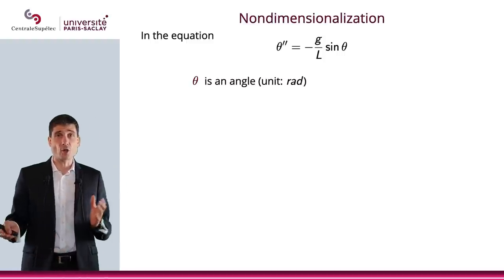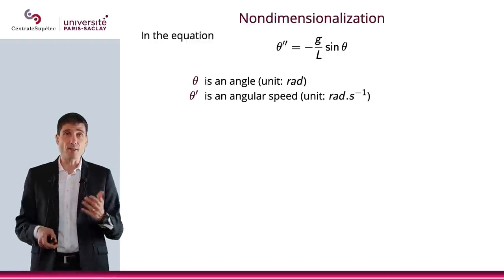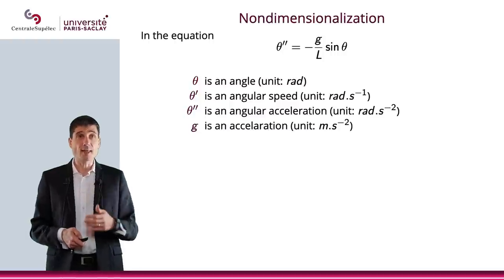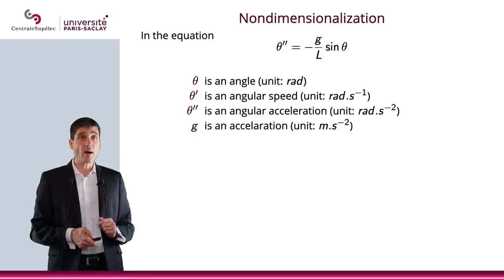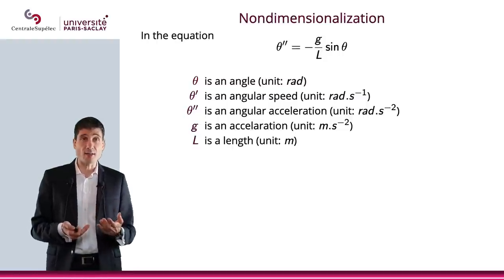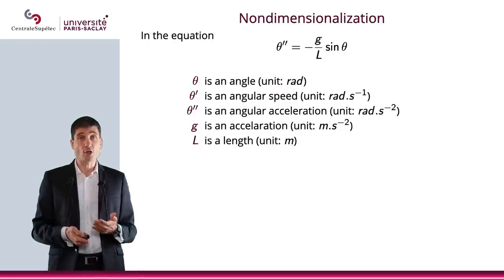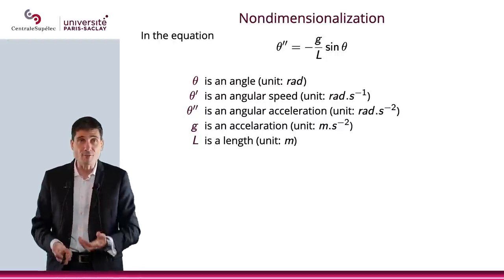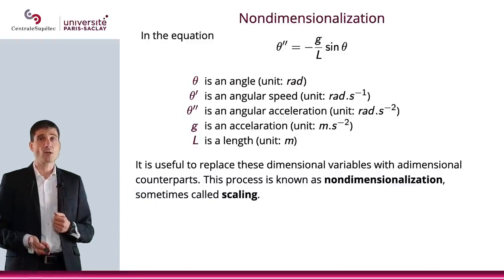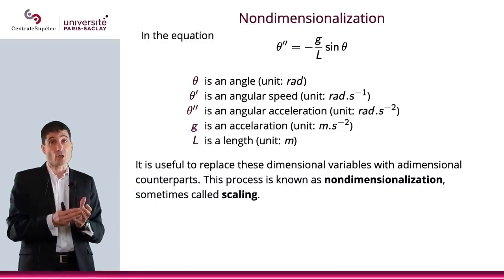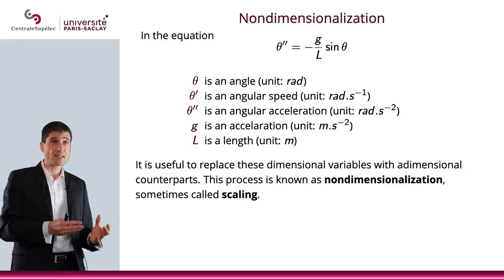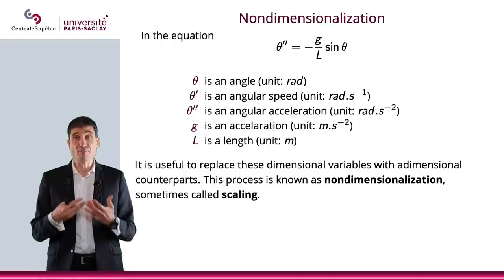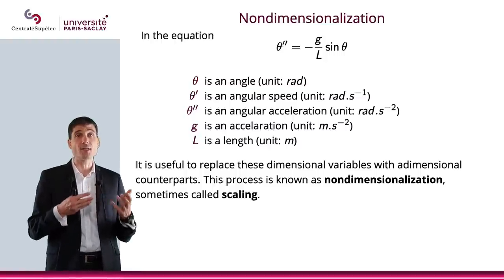Now, in the equation, what are the units that are coming into play? The angle, the unit is radian. The angular speed, that will be radian per second. The angular acceleration, that will be radian per second squared. Obviously, g, which is an acceleration, that's a meter per second squared, and the length, the unit is a meter. We could change the units. We could have other units, but we'll still have a unit of length, a unit of acceleration, and so on, so forth. Now, what we need to do from a mathematical point of view is to replace these dimensional variables with nondimensional variables. And this process is called scaling or it's called nondimensionalization.